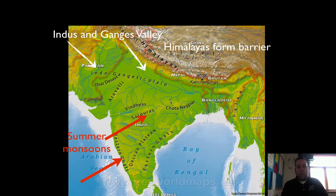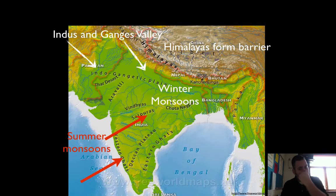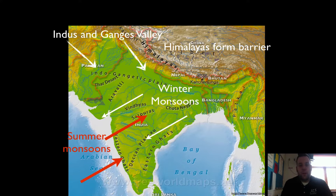In the wintertime, the winds shift and they come out of the north — we have winter monsoons. What happens with these winter monsoons is that the winds come off the Himalayan mountains and bring dry, crisper air, which dries out the area. In the wintertime, you'll notice that it's a lot drier.